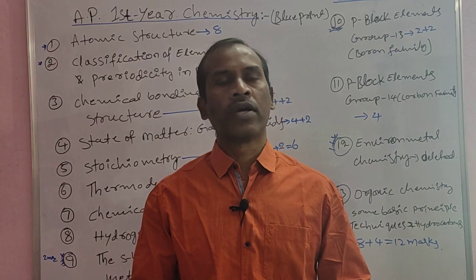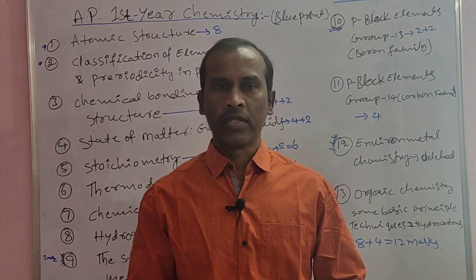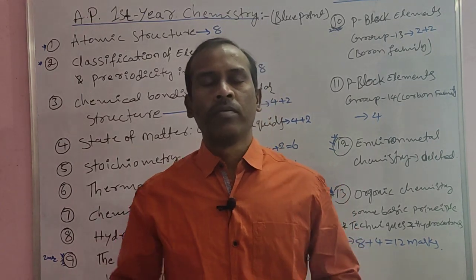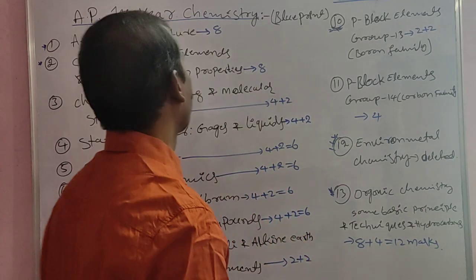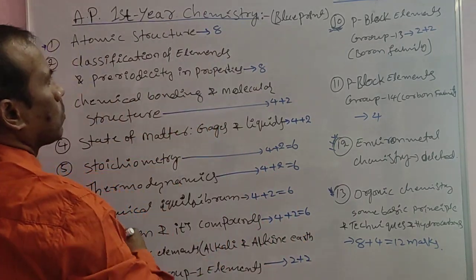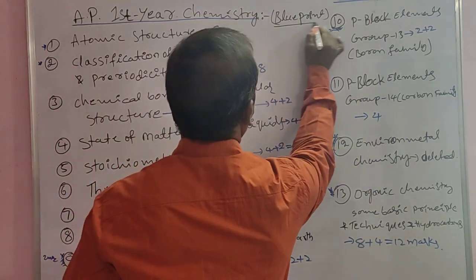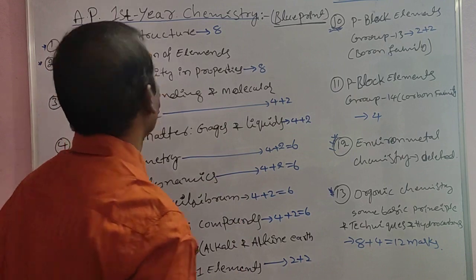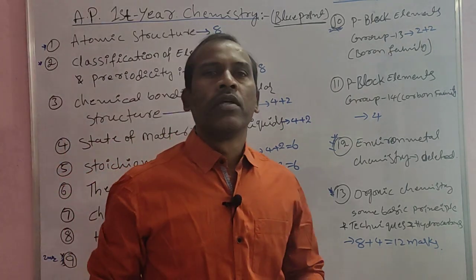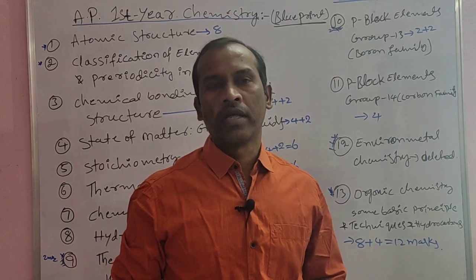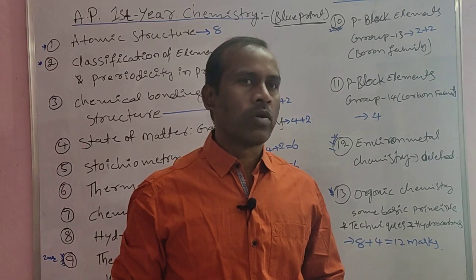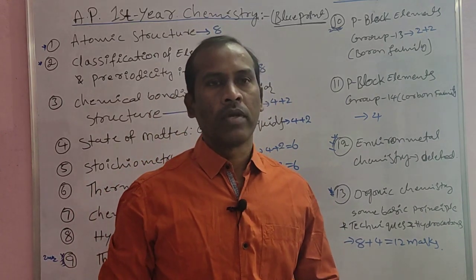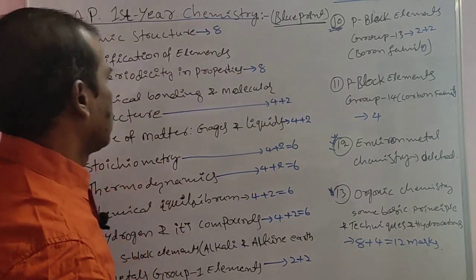We have long answers, very short answers — let's do a topic-wise analysis. Okay, so IP First Year Chemistry according to weightage marks blueprint. According to the AP Government blueprint, there are 13 topics in chemistry. Some topics are shared and some have lower weightage, like environmental chemistry, while the remaining topics have their own specific marks.